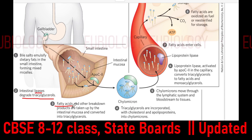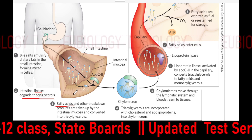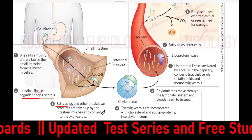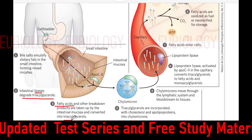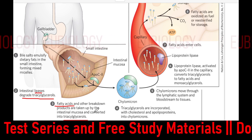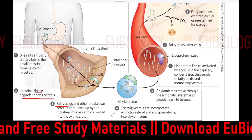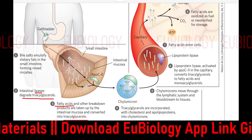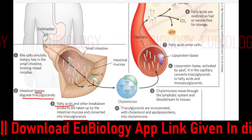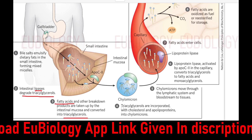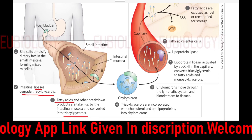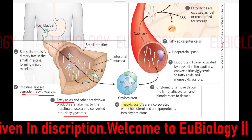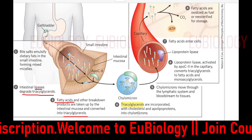The fatty acid will enter into the intestinal mucosal cell and be converted again into triglycerol. This is an important step. This triglycerol is again insoluble, so we need something that can solubilize it and allow it to travel into the blood. We need to surround this triglycerol with a protein.